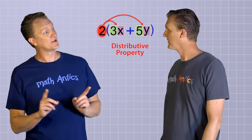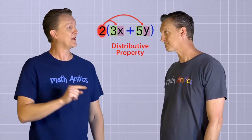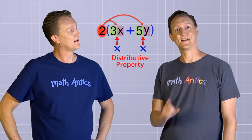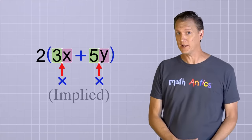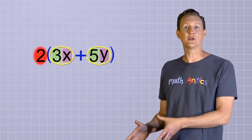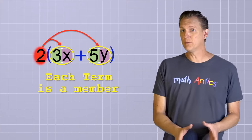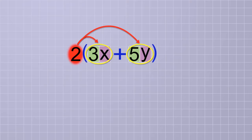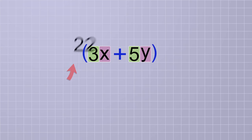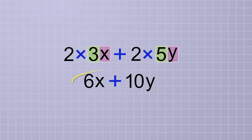Now, the distributive property does not work with members of a group that are being multiplied — and these terms do have multiplication. But notice that even though the terms do have multiplication in them, the terms themselves are being added. So we distribute a copy of the factor 2 to each whole term, but not to each part of a term. We treat each term in a polynomial as an individual member of the group, even if that term has multiplication going on inside of it. So distributing the factor 2 to each term gives us 2 times 3x plus 2 times 5y, which simplifies to 6x plus 10y.